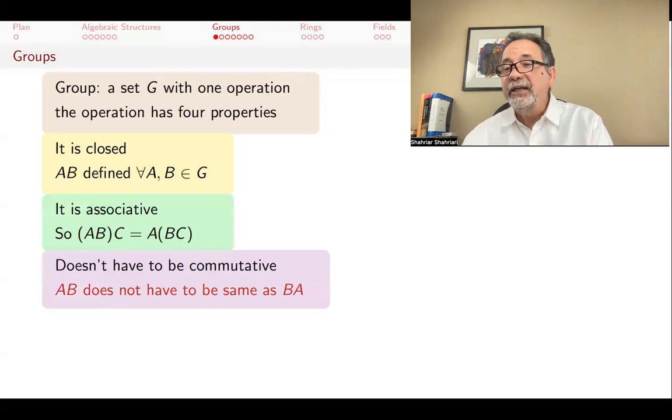AB does not have to be the same as BA. Even though this is a property of multiplication of numbers, we're not assuming it for this kind of general multiplication. And in fact, there are many interesting questions about commutativity in general groups. Sometimes, for example, it's forced. Other times, it's not.